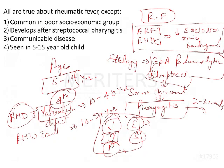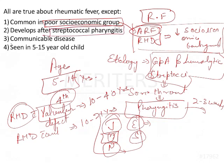This disease is not a communicable disease — that is the exception among all the options. The first option, common in poor socioeconomic group, is correct. Develops from streptococcal pharyngitis is also correct. Communicable disease — no, it is not communicable. The fourth option, seen in five to fifteen years old children, is also correct. So the answer is the third statement: it is not a communicable disease.